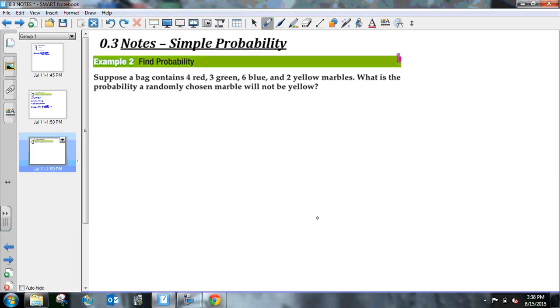Take a look at the next example. It says: suppose a bag contains 4 red, 3 green, 6 blue, and 2 yellow marbles. What is the probability a randomly chosen marble will not be yellow? Let me write some things down. I've got 4 red, 3 green, 6 blue, and 2 yellow.